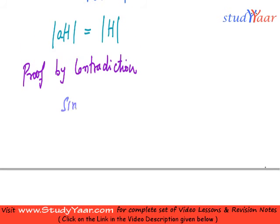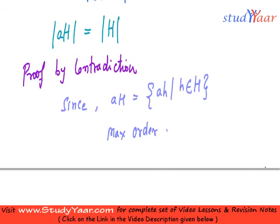Since your H is of the type A H where H belongs to capital H, therefore maximum order of A H is equal to the order of H, right.